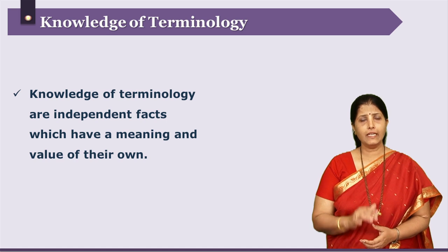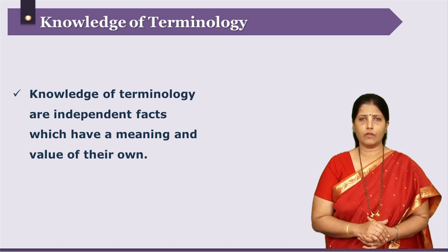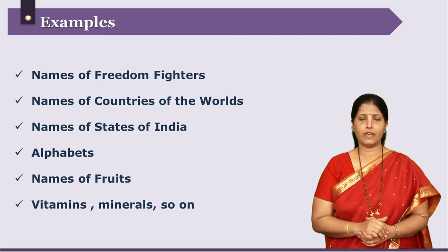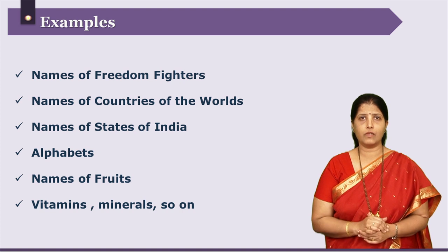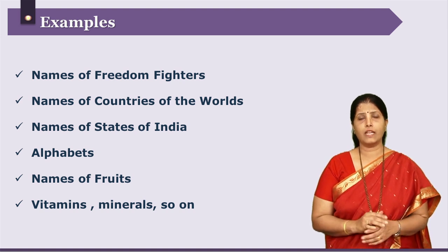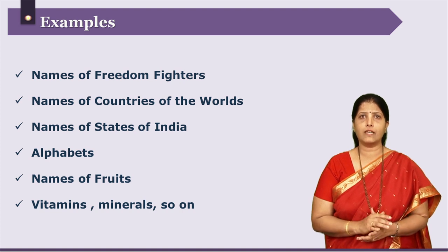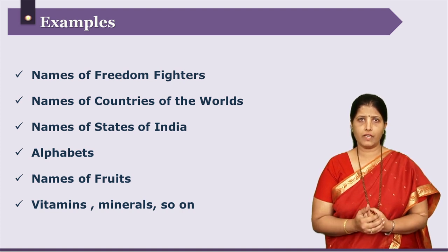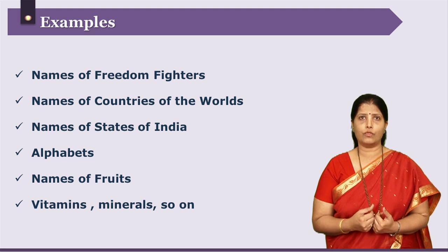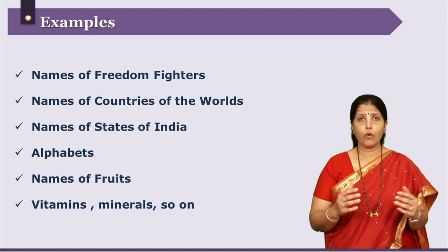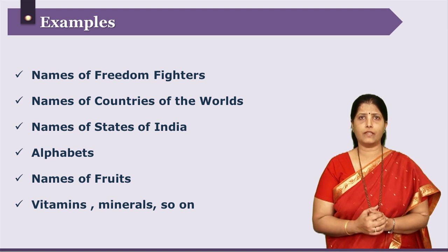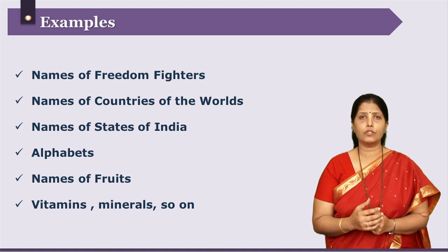Knowledge of terminology consists of independent facts which have a meaning of their own. For example, names of freedom fighters, names of different countries of the world, names of different states of India, alphabets as symbols which learners can read, names of fruits, names of different vitamins, minerals, and so on. These are small bits of information which are independent on their own — they have a meaning of their own but are not connected with each other. All these facts can be collected together under the title of knowledge of terminology.